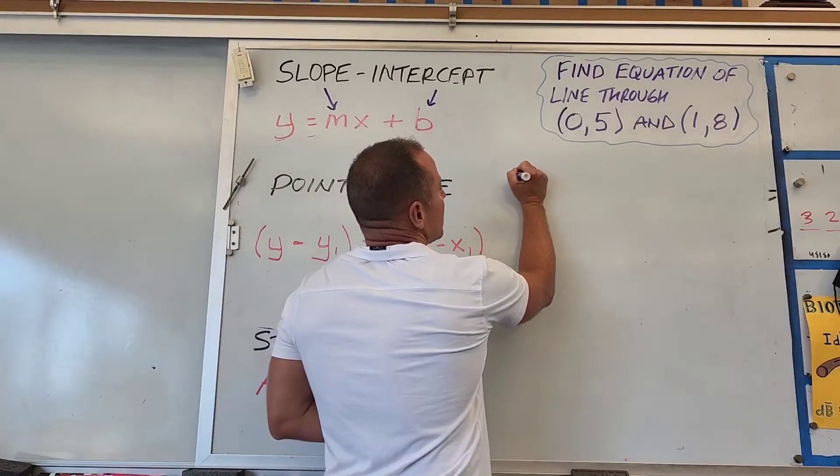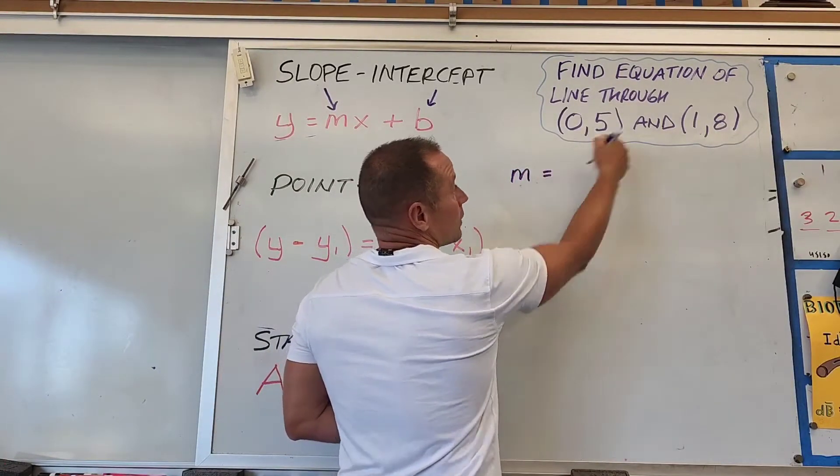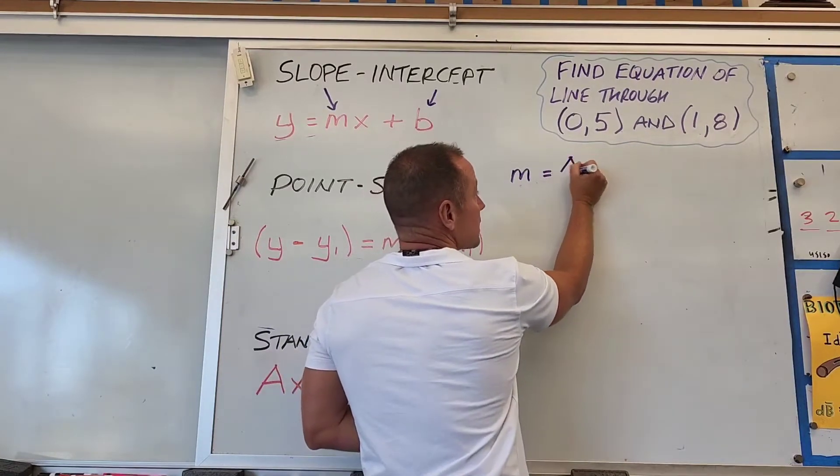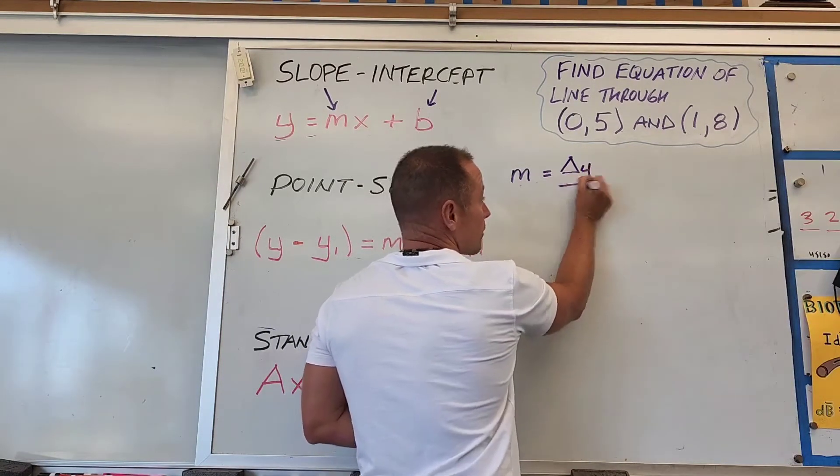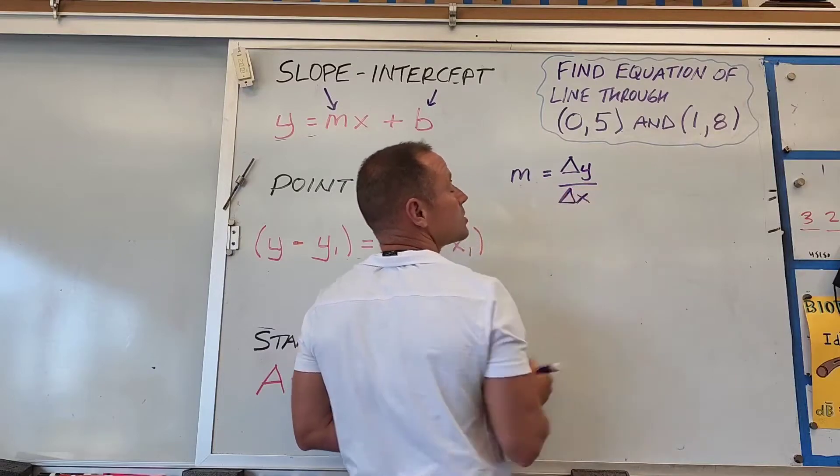First, we'll look at the slope of the line through these two points. Slope is the rise over the run, or the change in y-coordinate over the change in x-coordinate.